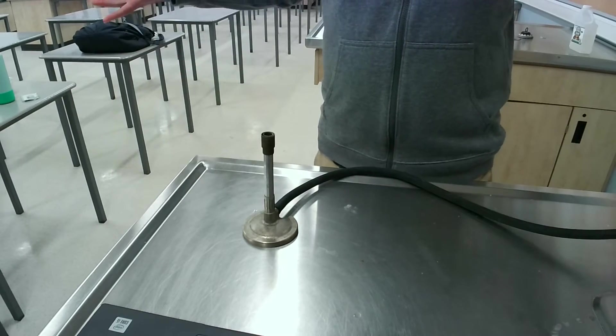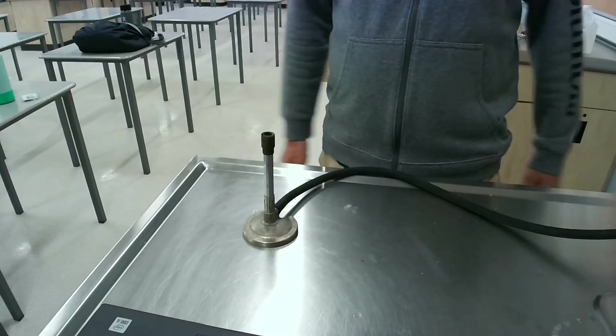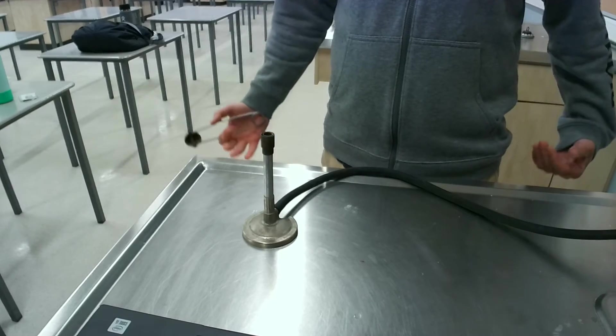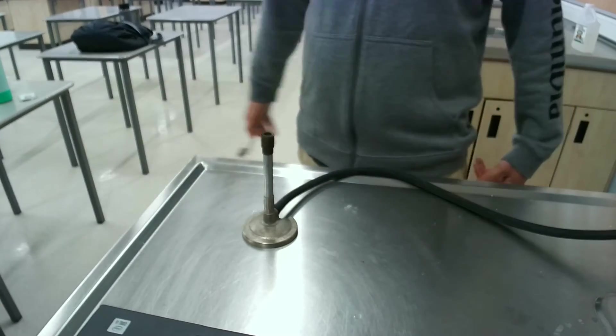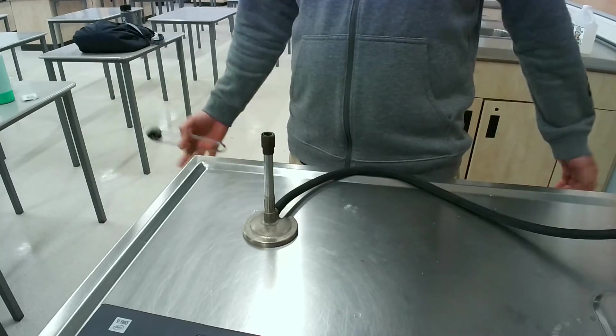Reaction number seven is lighting the Bunsen burner. This serves as training for lighting a Bunsen burner should you ever find yourself needing to light one.